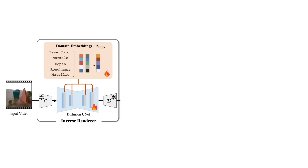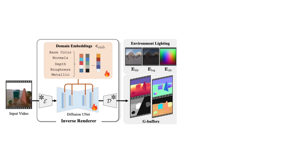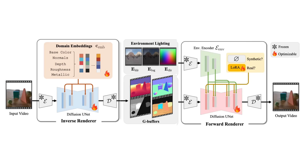The Diffusion Renderer bypasses these limitations by using video diffusion models to estimate intrinsic scene properties — such as geometry, material buffers, and lighting — from real-world videos under inverse rendering, and then synthesizes realistic renderings under new conditions under forward rendering.